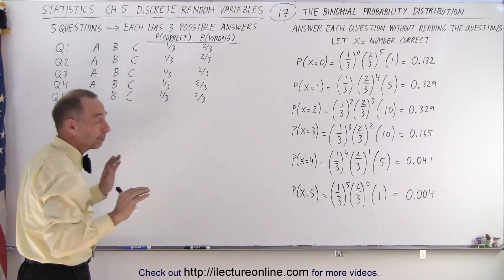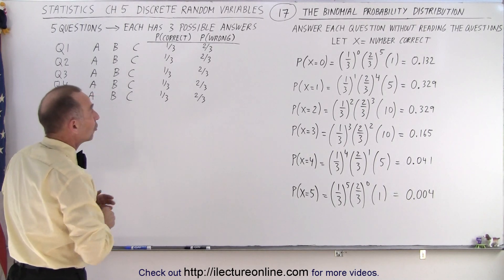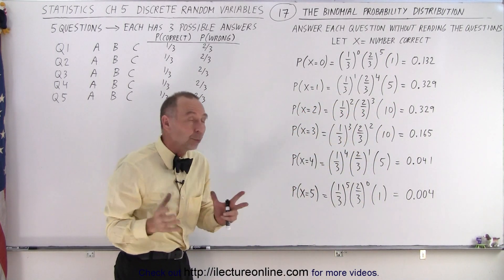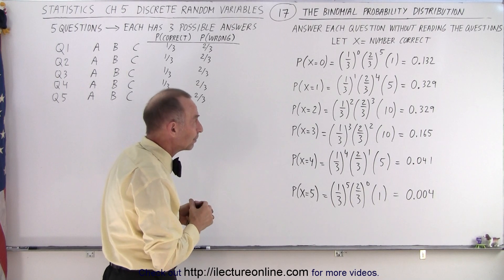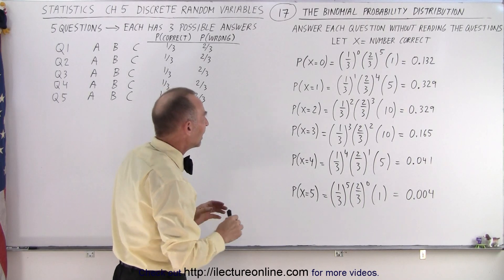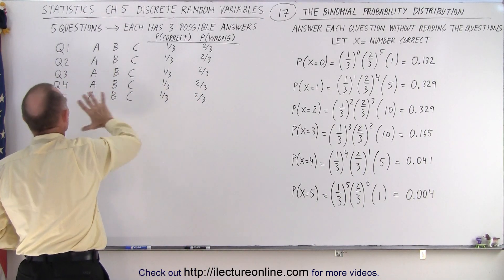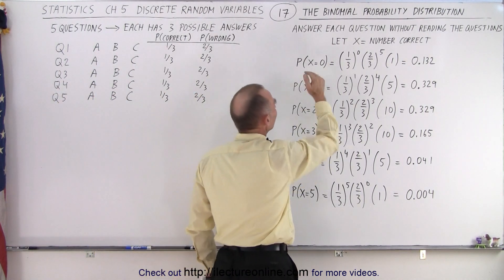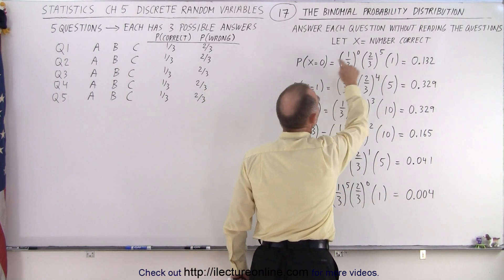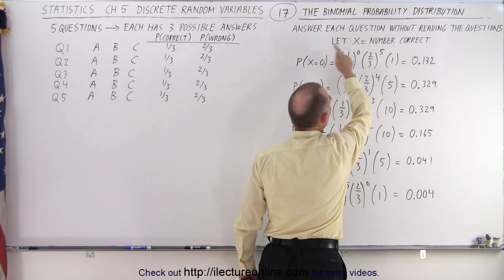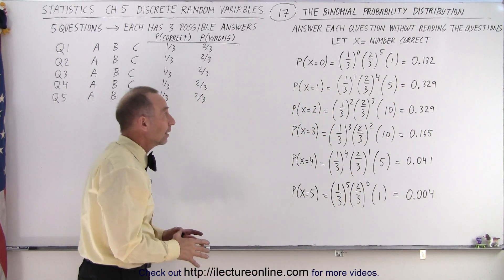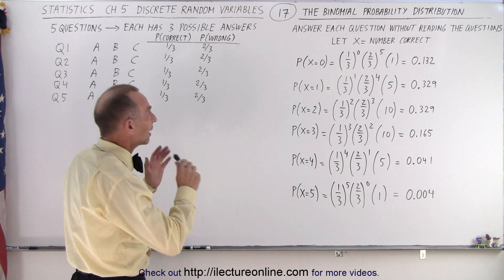So, what are these numbers right here — 1, 5, 10, 10, 5, and 1? Well, that is essentially what we call the binomial distribution. We'll show you how they're calculated later, but we want to get an intuitive feel for their value. What are all the possibilities that in every single case you pick the wrong answer? The probability is two-thirds that we pick the wrong answer, and there's only one combination in which that can happen five consecutive times, giving us a total probability of 0.132 for that outcome.